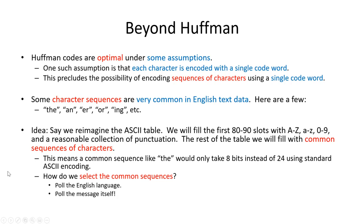Here's a motivation and example. Let's say we were reimagining the ASCII table today. We might fill in the first slots with standard characters, but then add coding for common English substrings or words that we can encode with fewer bits. For instance, if the word 'the' was included in the table, it would only take eight bits instead of the normal 24 bits if we encoded T, H, and E each as separate characters.